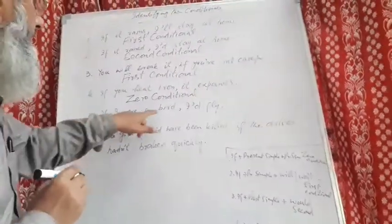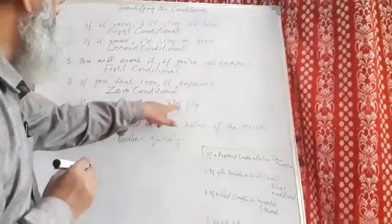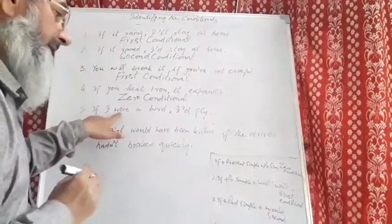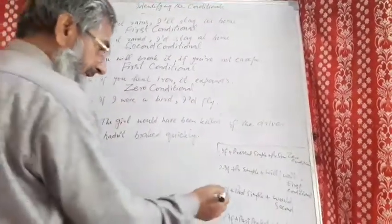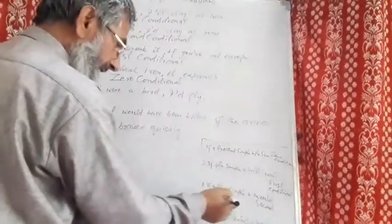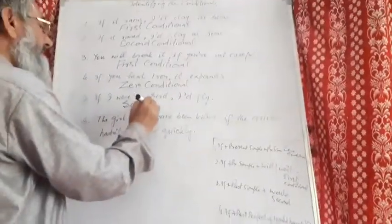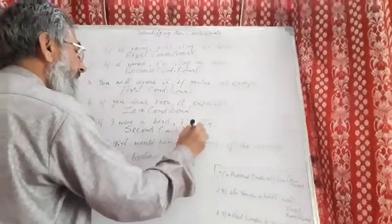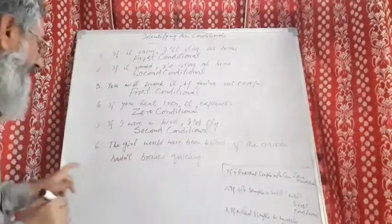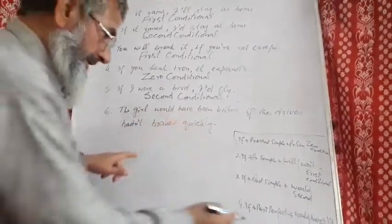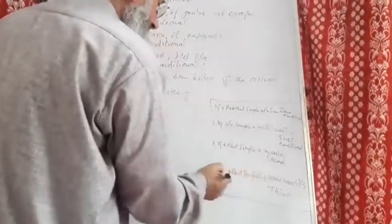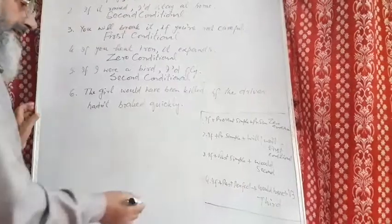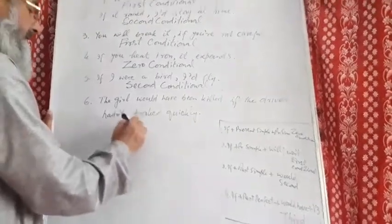Number 5: if I were a bird, I would fly. Here it is a were construction, and the were construction is used in case of the second conditional or would condition. So it is second conditional. The last sentence: the girl would have been killed — would have been — so it is naturally the third conditional.